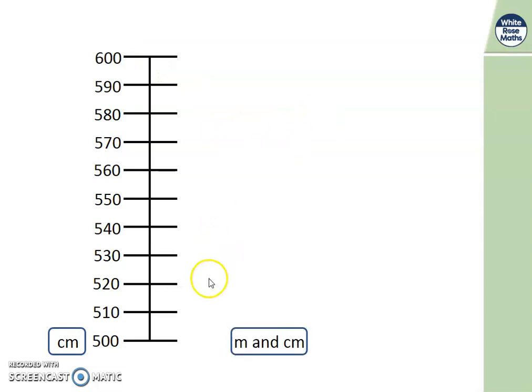On this side I'm going to record the same measurement in metres and centimetres. I wonder what 500 centimetres is in metres and centimetres. Well done. If you know that 100 centimetres is 1 metre. So 500 centimetres is 5 metres. So what would come next for 510 centimetres?